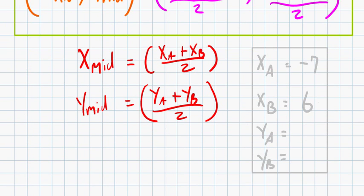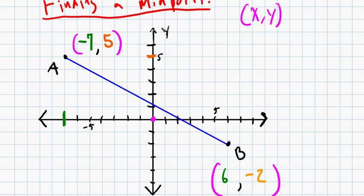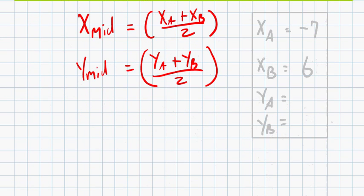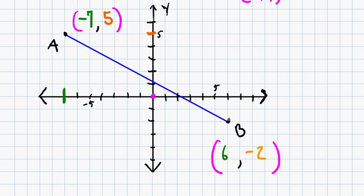So try it out. What should y_A be? Did you get it? Did you get that y_A is 5? And then y_B, the y-coordinate of point B, is going to be negative 2.